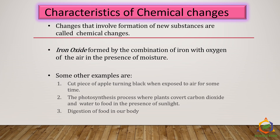Changes that involve formation of new substances are called chemical changes. Iron oxide formed by the combination of iron with oxygen in air in the presence of moisture or humidity is called rusting, and it is a chemical change. Cutting a piece of apple which turns black when exposed to air is a classic example of an oxidation reaction. The photosynthesis process, where plants convert carbon dioxide and water to food in the presence of sunlight, is a chemical change. Digestion of food in our body is also a classic example of chemical change.